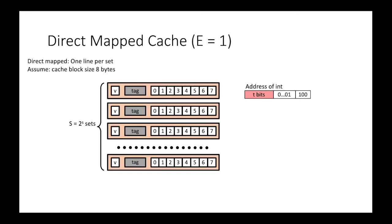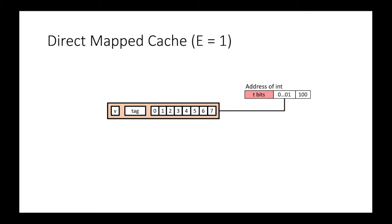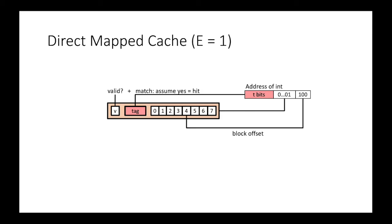Let's take a deeper look at the direct mapped cache, which has only a single cache line per set. First, we locate the target set using the set index bits. Next, we compare the tag bits between the cache line and the memory address. If they match and the valid bit is 1, it's a cache hit. In this cache configuration, we need only one comparison of tag bits, as there is only a single cache line. In the case of a cache hit, the final step is to locate the data or instruction using the block offset bits.